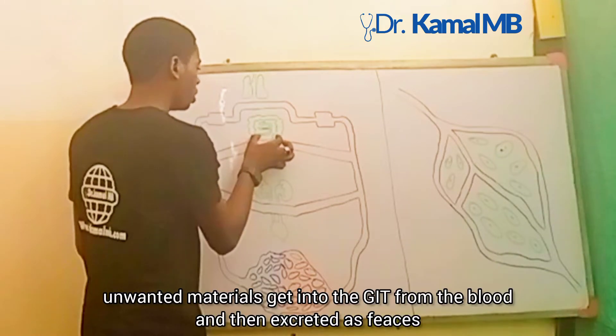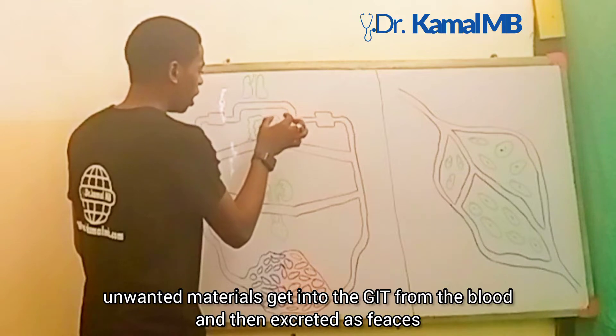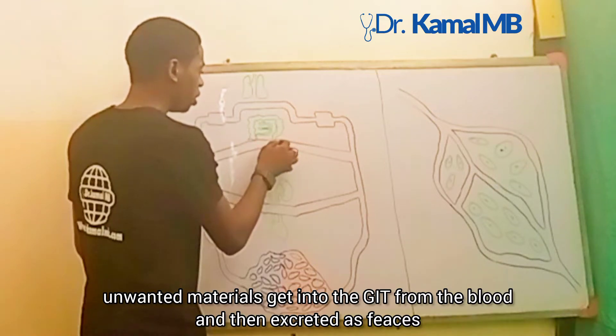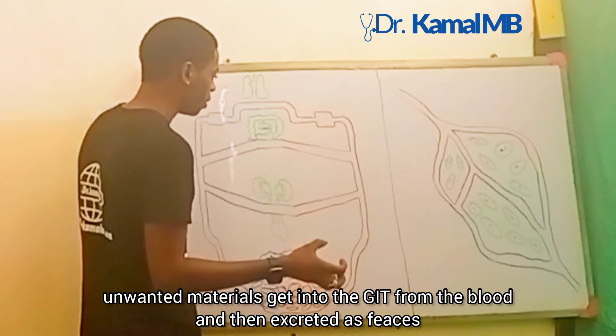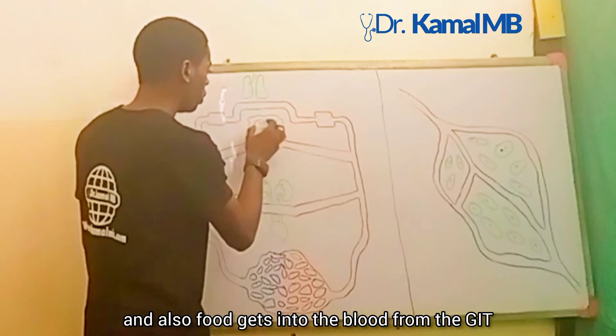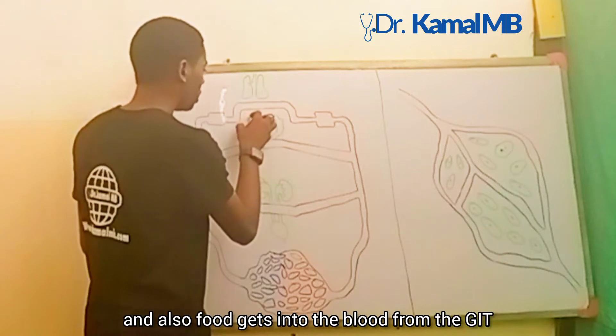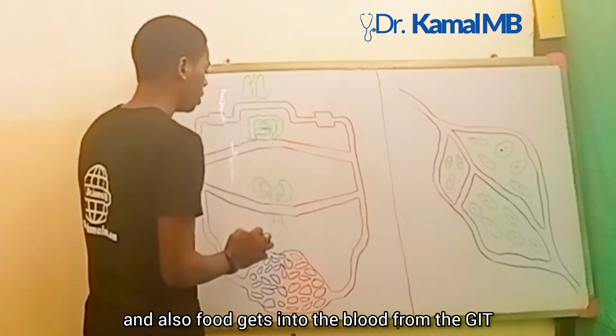Unwanted materials get into our GIT from the blood and then excreted as feces, and also food gets into the blood from the GIT.